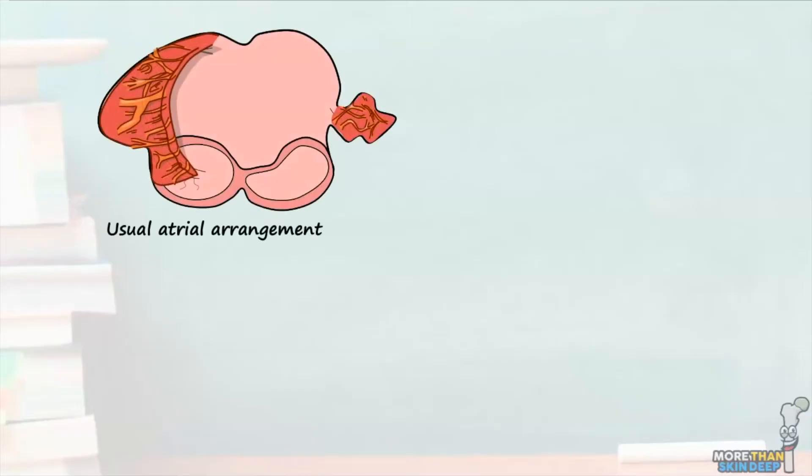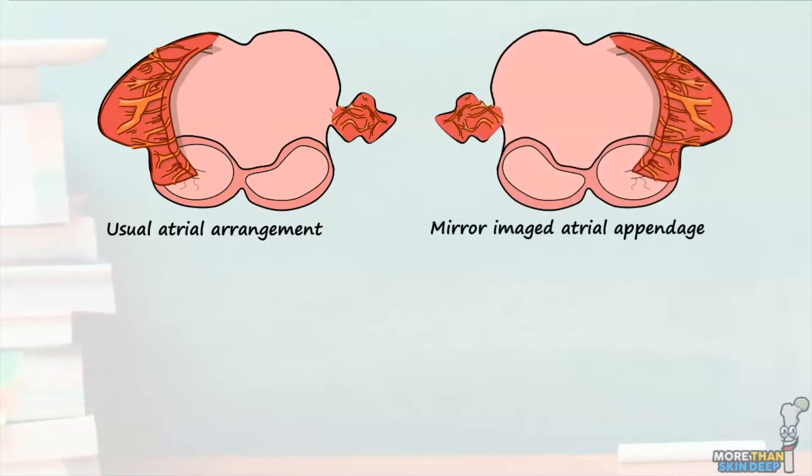Due to these differences between the left and right atrial appendages, we can classify the atria into one of four atrial arrangements. The first is known as usual atrial arrangement, or situs solitus in Latin, where the right atrial appendage is on the right and the left atrial appendage is on the left. The second is mirror-imaged atrial appendages, otherwise known as situs inversus, where the right atrial appendage is now on the left and the left atrial appendage is now on the right.